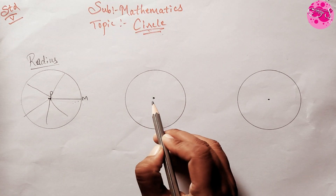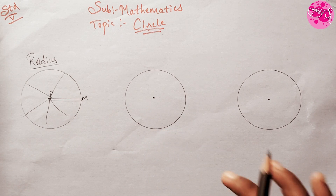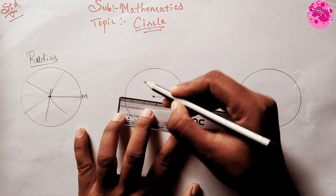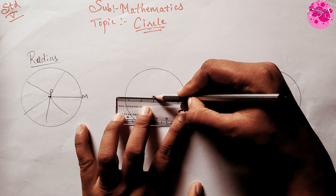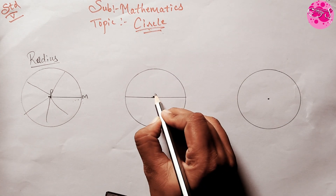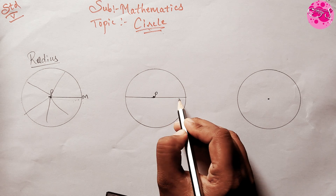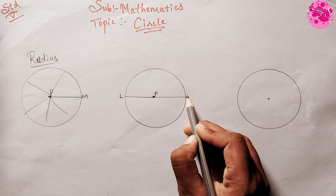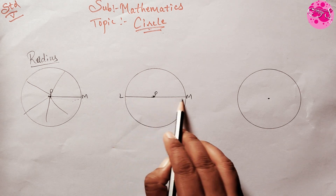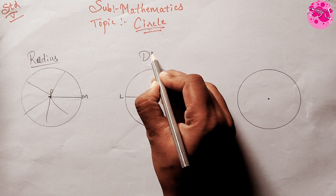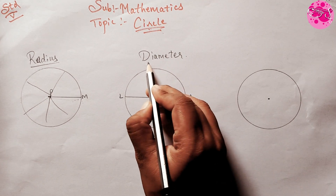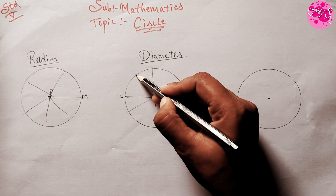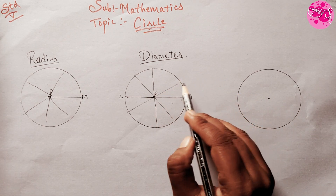After drawing a radius, if we extend this line to the other side through the midpoint, it becomes a diameter — let's name it L. A line passing through the center of the circle is called a diameter. In this figure, line LM passes through center P, so LM is the diameter. We can draw many diameters on a circle, but each must pass through the midpoint.